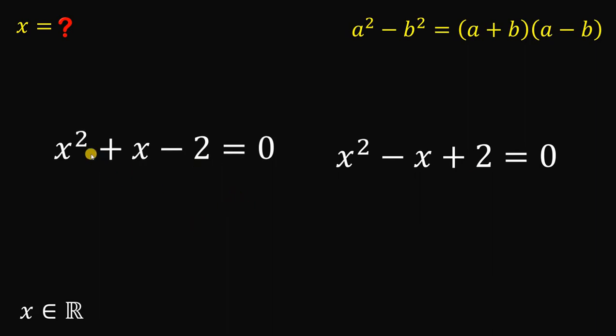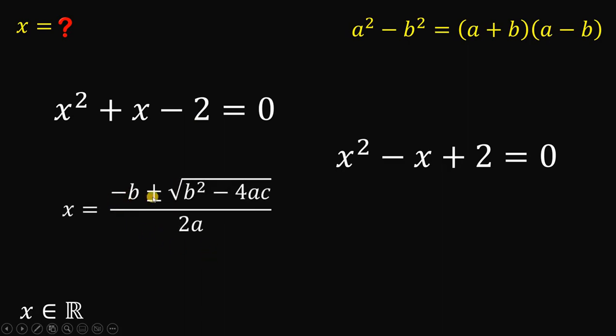Now, let's focus on this first case. So, x squared plus x minus 2 equal to 0. To solve for the value of x here, we will use the quadratic formula. We have negative b plus or minus square root of b squared minus 4ac all over 2a.